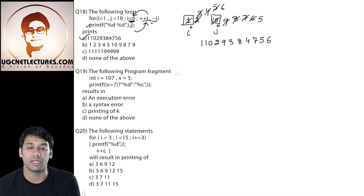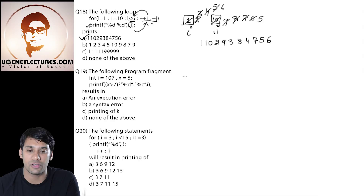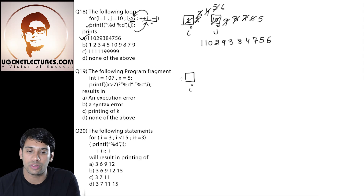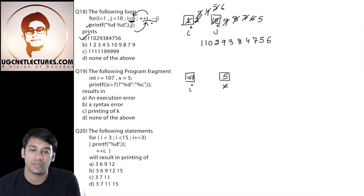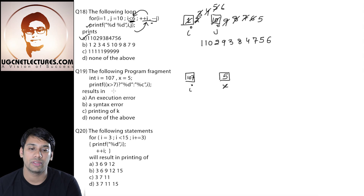Now check out question number 19. In this question, we are having two variables: variable i and variable x. The value stored in variable i is 107 and the value stored in variable x is 5. Then in the printf statement, we are having a condition — if the value of x is greater than 7.